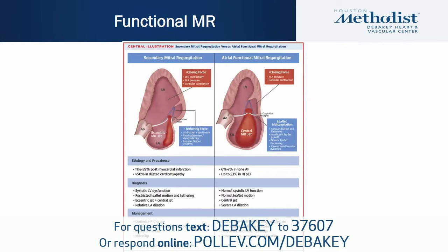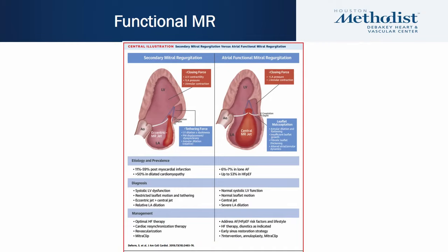Switching gears to functional MR — this can be divided into secondary MR from ischemic or non-ischemic cardiomyopathy, where LV dilation and dyskinesia cause displacement of the papillary muscle and tethering of the leaflets, typically in patients with depressed EF. Treatment includes guideline-directed medical therapy and CRT. Atrial functional mitral regurgitation occurs in patients with preserved LVEF who have atrial fibrillation or heart failure with preserved ejection fraction, characterized by marked LA dilation leading to annular dilation.